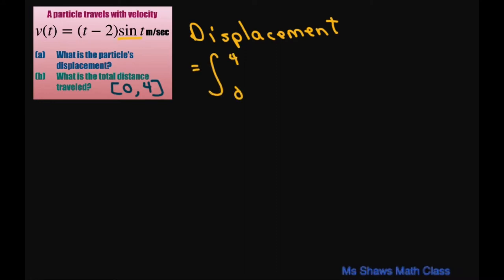I'm going to go ahead and distribute this. This is t sine of t minus 2 sine of t dt.